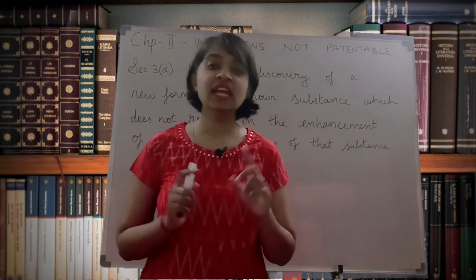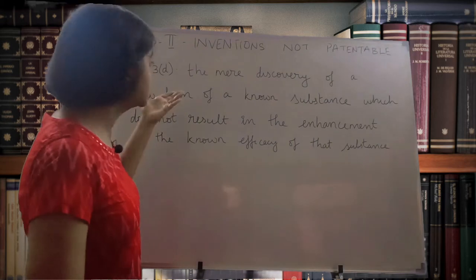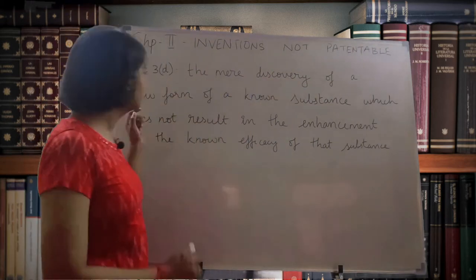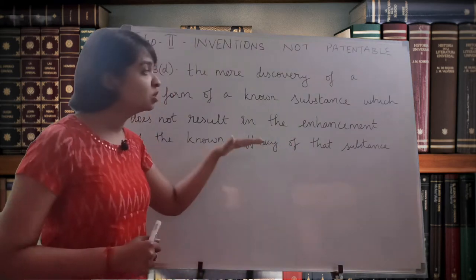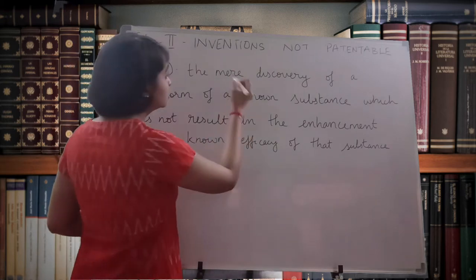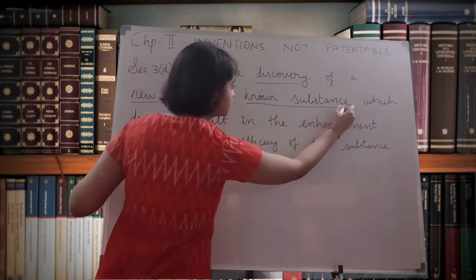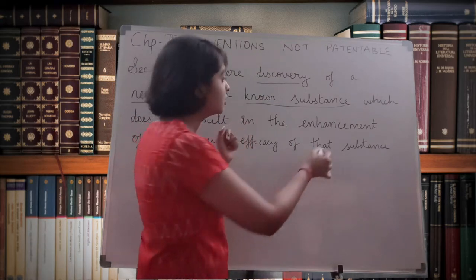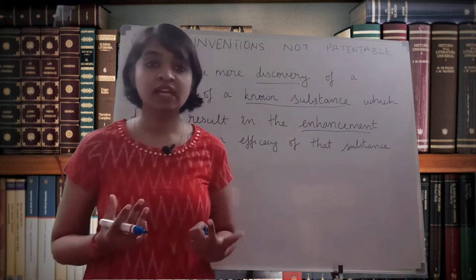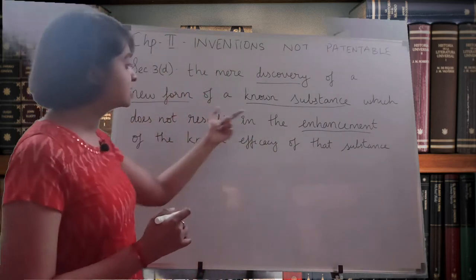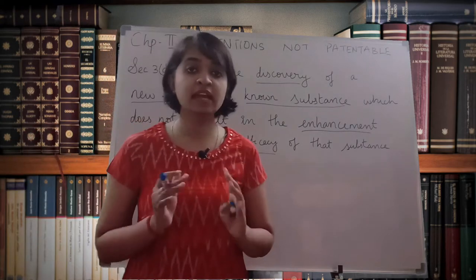This clause is very lengthy and has many parts, so we'll be seeing it part by part. The first part says: the mere discovery of a new form of a known substance which does not result in the enhancement of the known efficacy of the substance cannot be granted patent. Enhancement means some improved quality — there is no improvement in the desired end product of the substance.